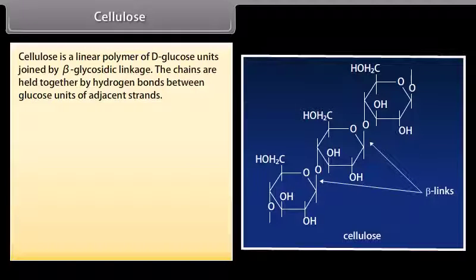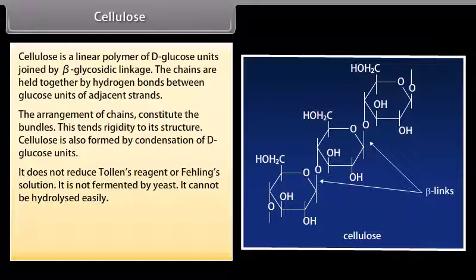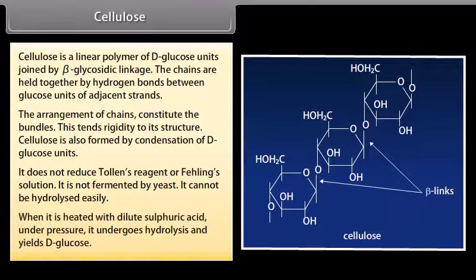Cellulose is a linear polymer of D-glucose units joined by beta-glycosidic linkage. The chains are held together by hydrogen bonds between glucose units of adjacent strands, and the arrangement of chains constitutes bundles, lending rigidity to its structure. Cellulose is also formed by condensation of D-glucose units. It does not reduce Tollens' reagent or Fehling's solution. It is not fermented by yeast and cannot be hydrolyzed easily. When heated with dilute sulfuric acid under pressure, it undergoes hydrolysis and yields D-glucose.